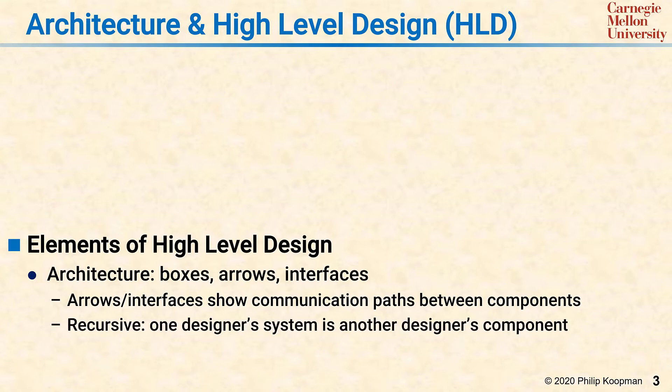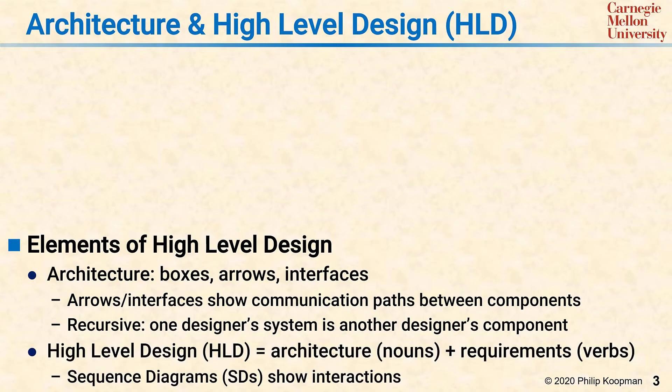Architecture tends to be recursive — one designer's system is another designer's component that gets used in an even bigger system. The high-level design document includes an architecture which provides nouns in the context of the requirements, which provides the verbs. Once you have nouns plus verbs, you understand what objects are supposed to perform what actions. A concrete way to represent this is using sequence diagrams to show the interactions between components in the system.